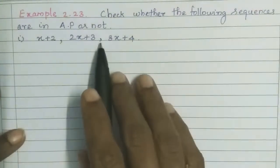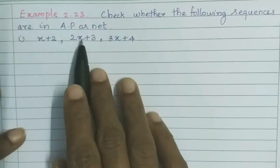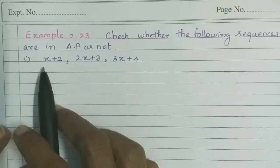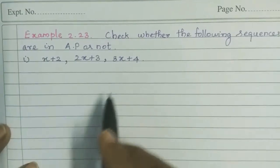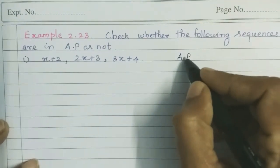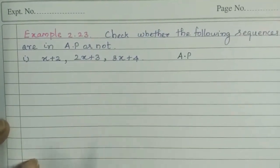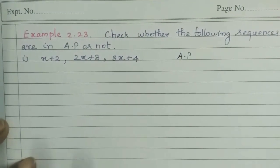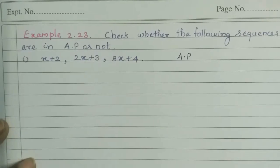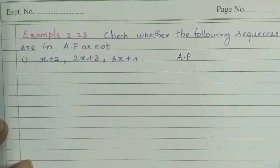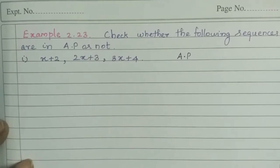To check if a sequence is in AP, we need to find the common difference. If the differences between consecutive terms are equal, then it will be AP.